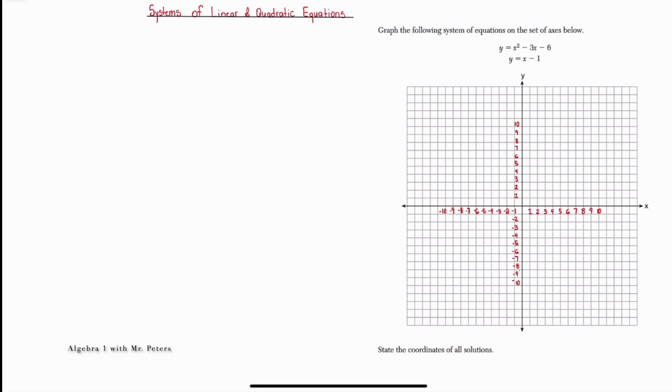y is equal to x minus 1. So we'll start off by plotting the y-intercept, which is negative 1, and then we'll use the slope of x, which is just 1 over 1, to plot other points on our graph. So after we plot a couple points, we can now connect them by drawing a line through it. This is what the linear equation should look like once we're done graphing it.